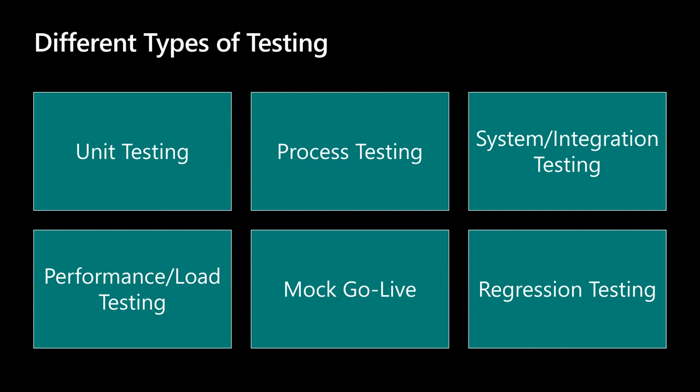The next topic is testing strategies. The Fast Track team at Microsoft assists customers implementing Dynamics 365, and a major part of that work involves testing and preparing for go-live. Testing can be broken down into main buckets, and we'll spend time on each type — focusing specifically on best practices for the warehouse and transportation management areas.